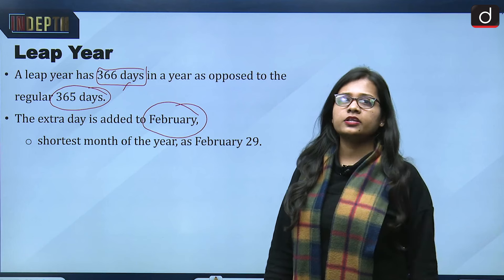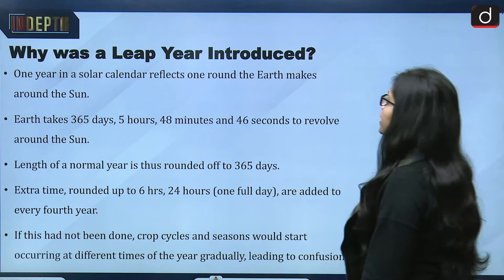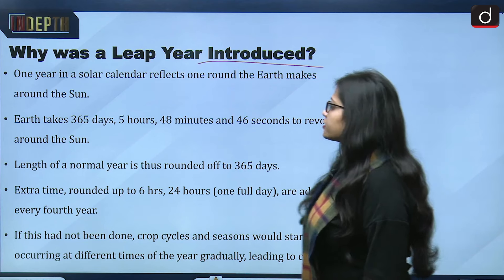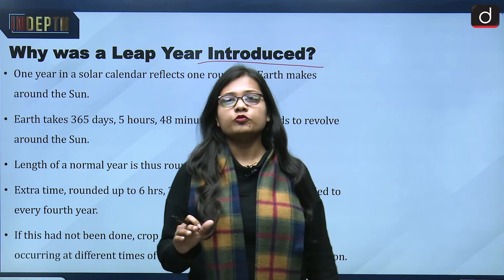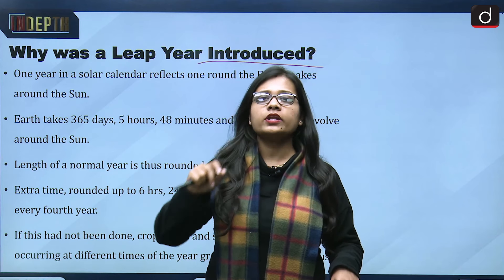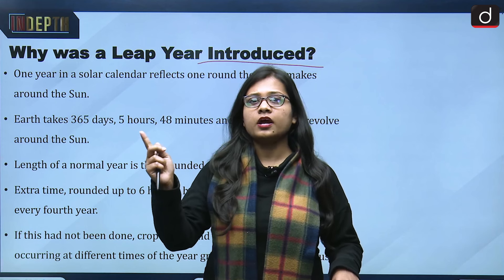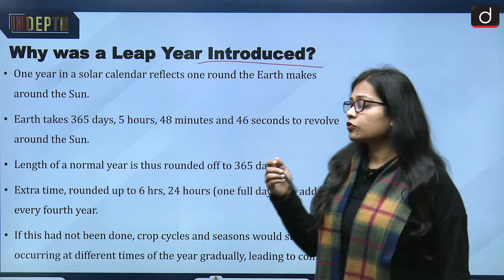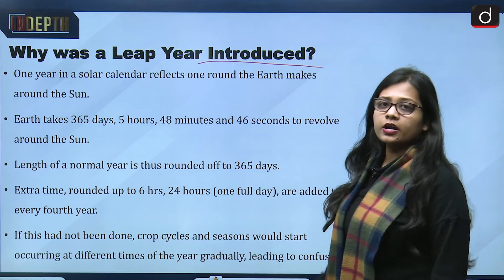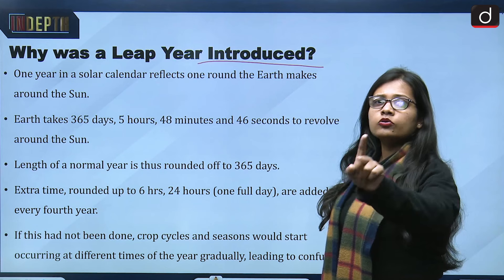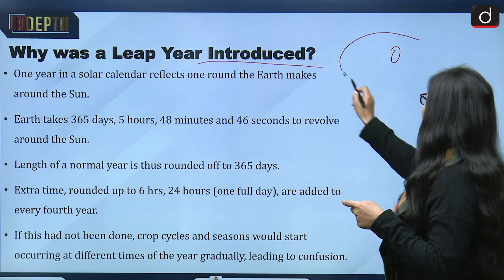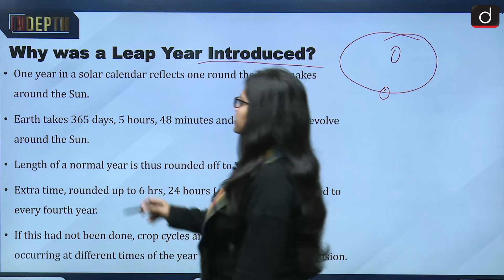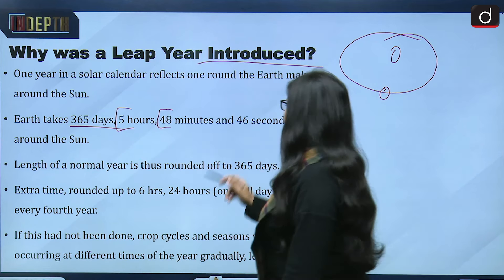Why was a leap year introduced? One year in a solar calendar reflects one round the earth makes around the sun. There are two kinds of movements: rotation, where the earth moves on its own axis, and revolution, where the earth takes a round of the sun. One full round is called revolution, and this revolution is responsible for the change of year.